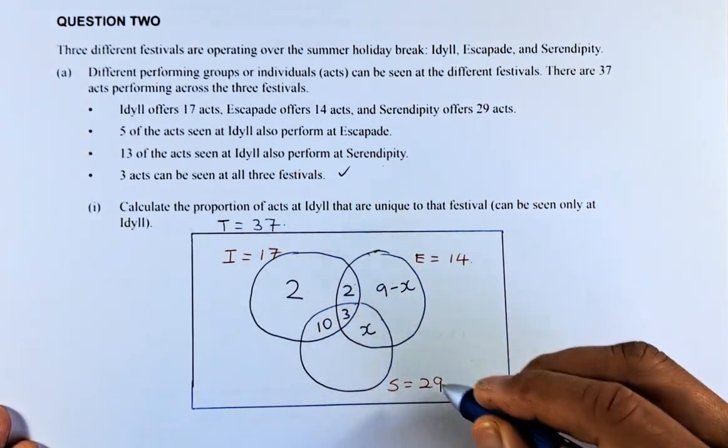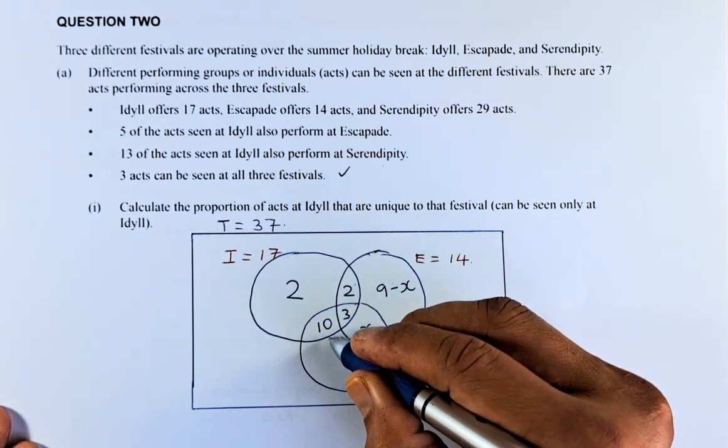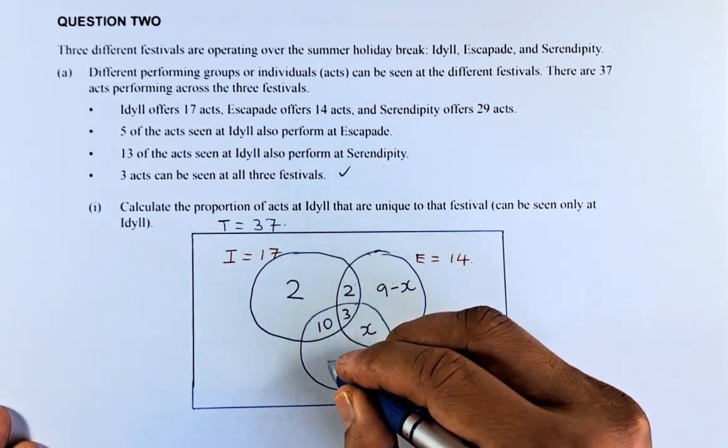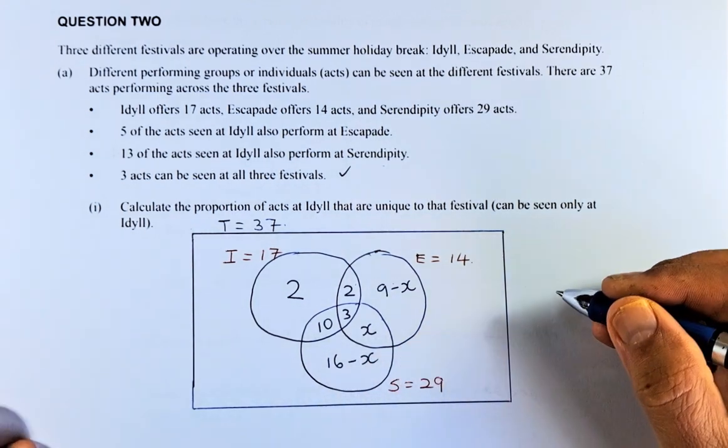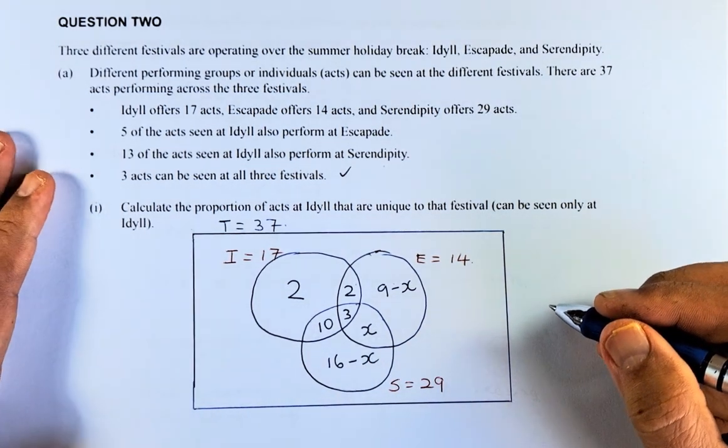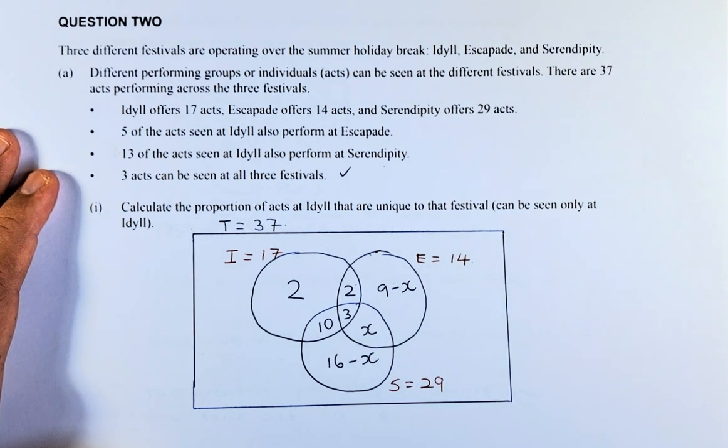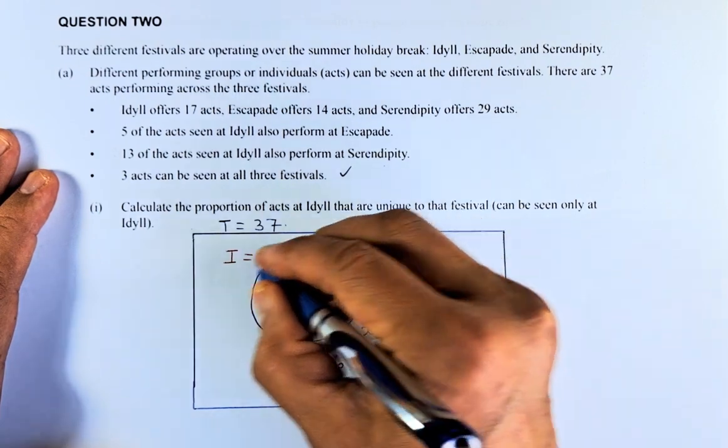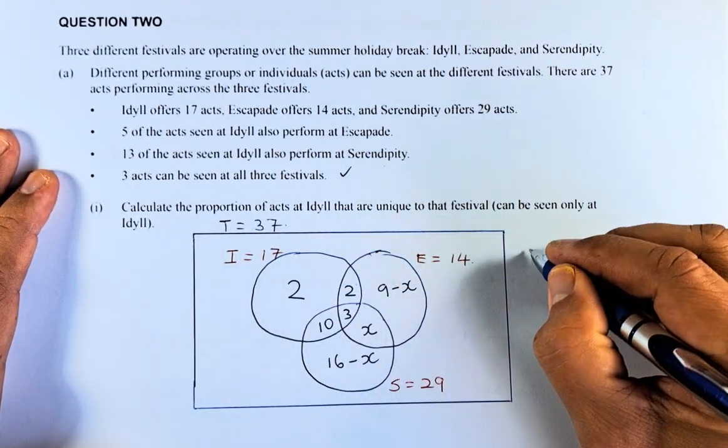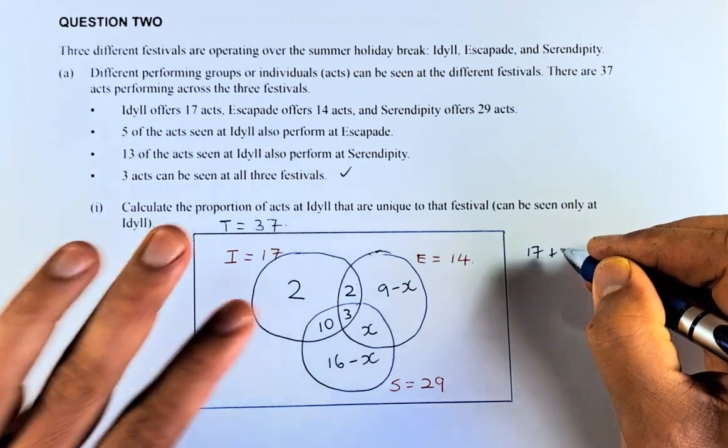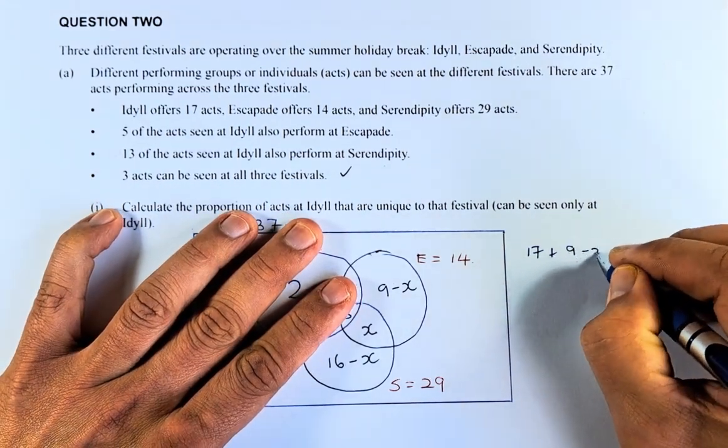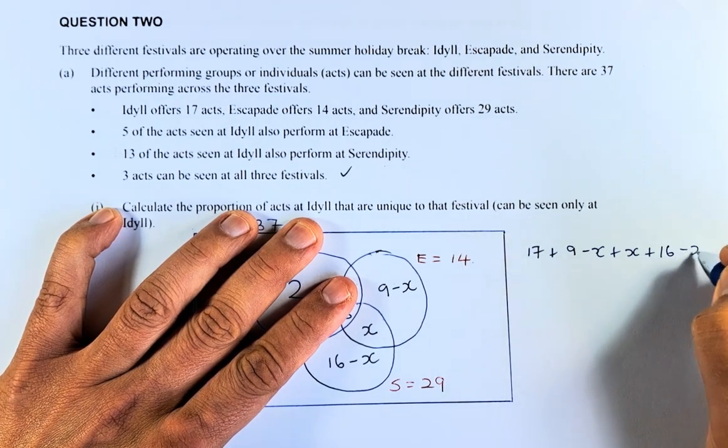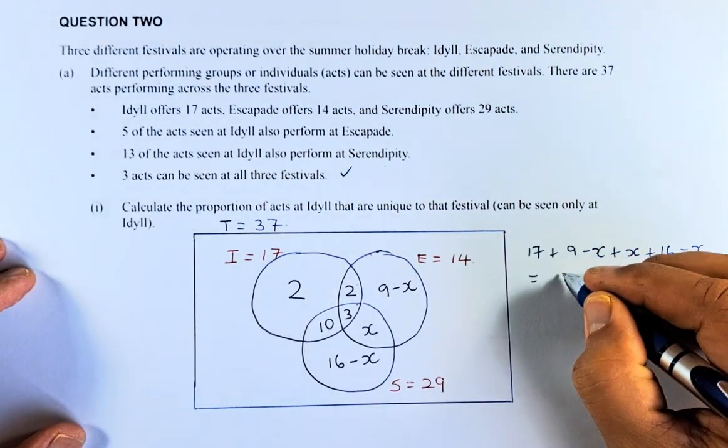Similarly, this whole region is going to be 29. So 29 minus 10 minus 3 minus X. So 29 minus 10 is 19, 19 minus 3 is 16. And that region is 16 minus X. So we are going to calculate the numbers in all the regions. We need to find the values of X. So to do that, we are going to use some algebra. So everything here, we know that equals 17 plus 9 minus X plus X plus 16 minus X. That must be equal to the total, which is 37.